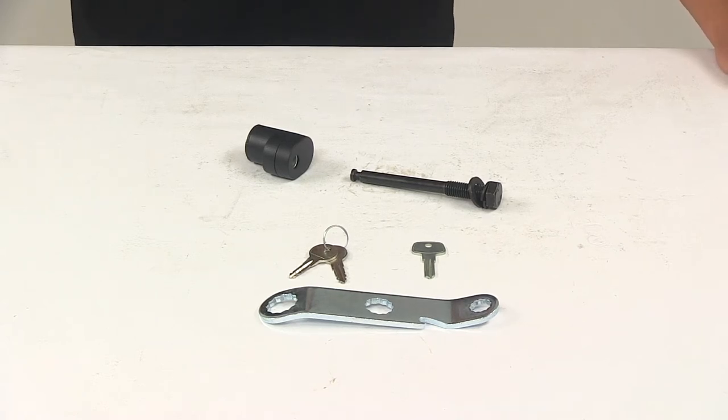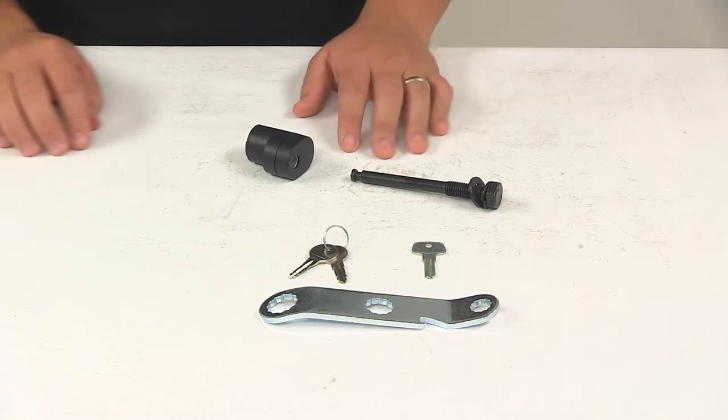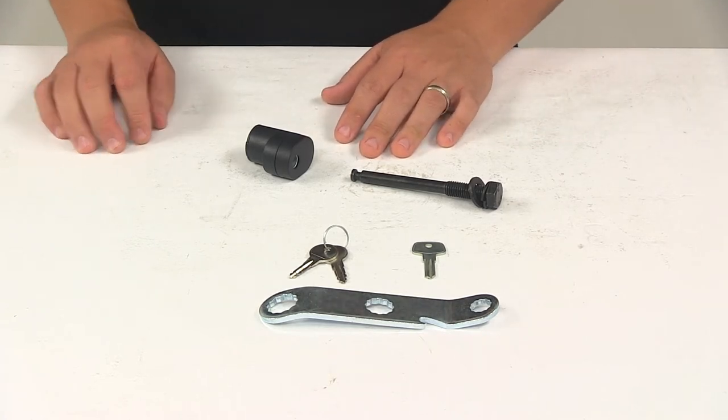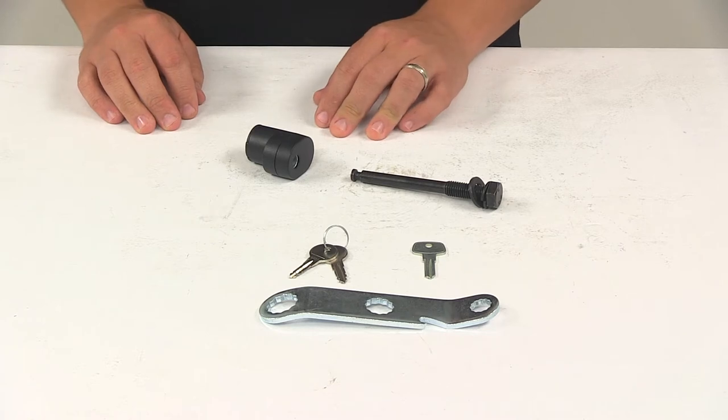Today we're going to be taking a look at the Thule SnugTight Hitch Lock, an anti-rattle device. This unit is used to lock your bike rack to the hitch of your vehicle and reduce the amount of play and rattle from within the hitch.